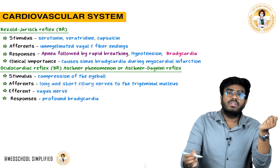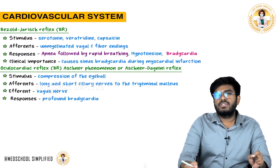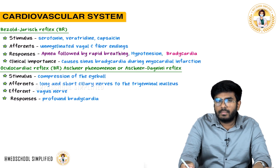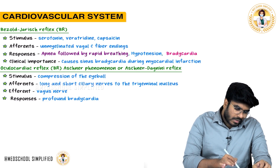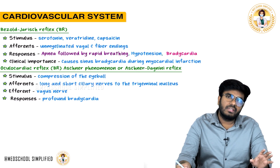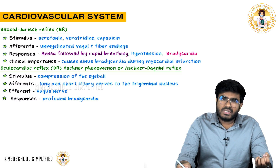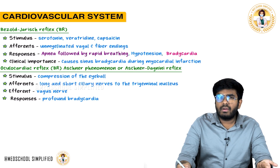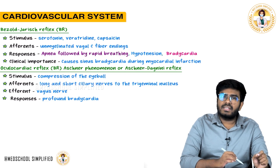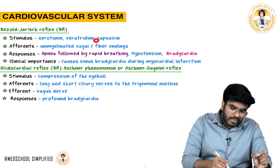Now let's discuss the Bezold-Jarisch reflex, which is again an example of a bradycardic reflex — heart rate comes down. The stimulus occurs whenever certain chemicals are introduced into the heart. For example, during myocardial infarction, tissue is dying and certain chemicals are released. In this condition the heart has to work less. The stimulus is the presence of chemicals like serotonin, veratridine, and capsaicin.